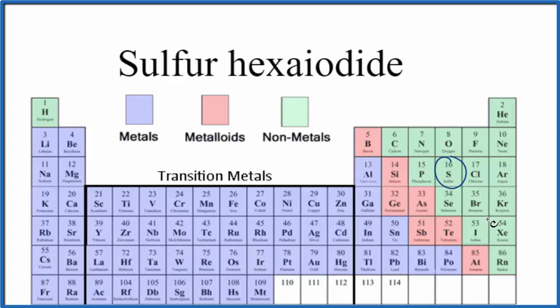And then iodine, iodine, right here, both non-metals. If we have two non-metals, it's a molecular compound, also called a covalent compound.